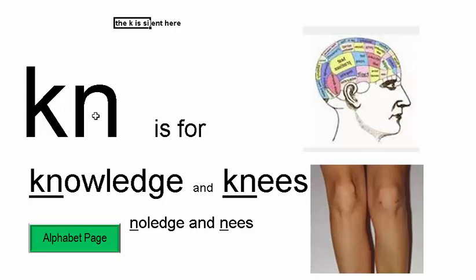K and N together — you have to remember when you see K and N together, the K is silent. So when you look at the word KNOWLEDGE or KNEES, the K and N make just the N sound. So this word is KNEES, and this word is KNOWLEDGE.